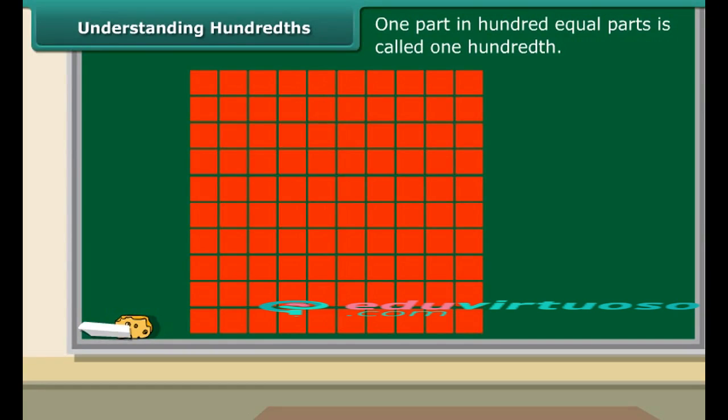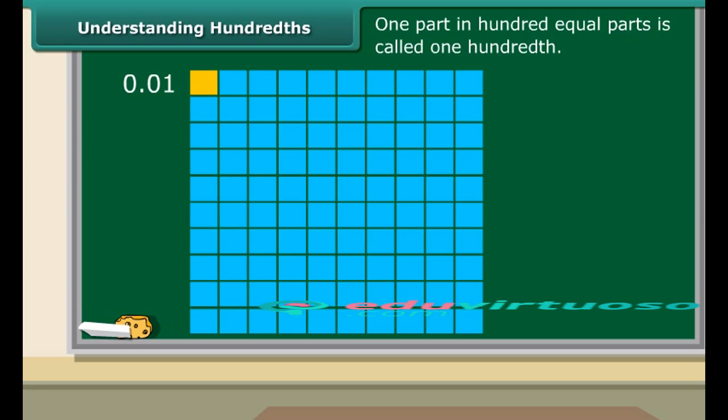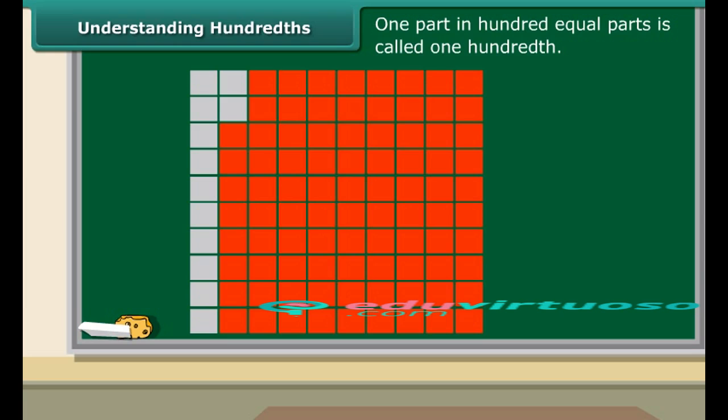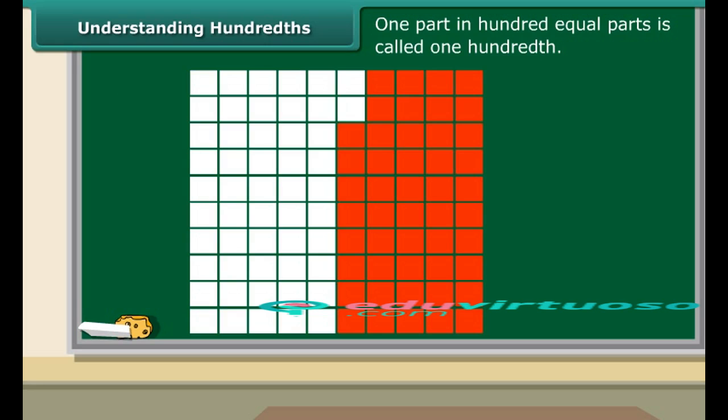One part in 100 equal parts is called 1/100. Each small square is called one-hundredth of the whole square. In decimal notation we read it as 0.01. 12 shaded squares will make 12/100 or 0.12. 33 shaded squares will make 33/100 or 0.33. 52 shaded squares will make 52/100 or 0.52.